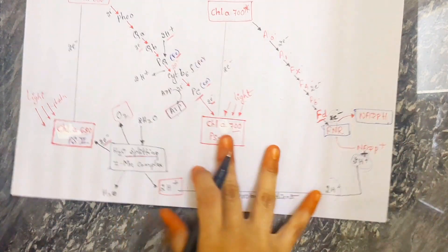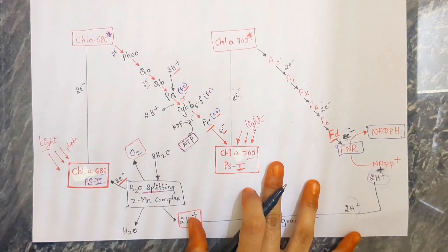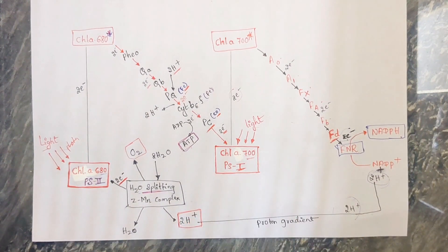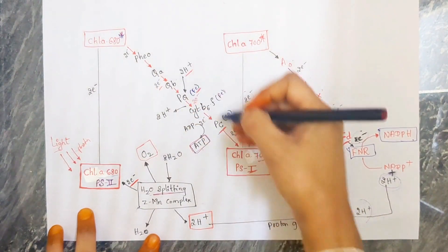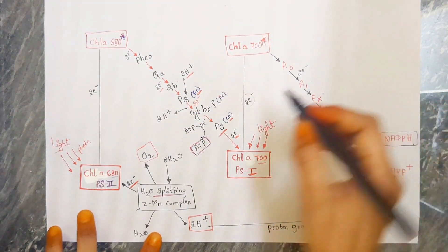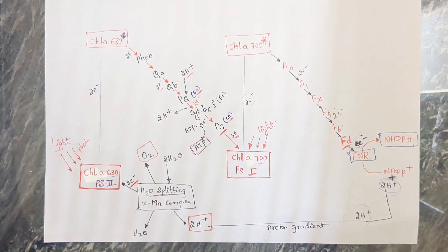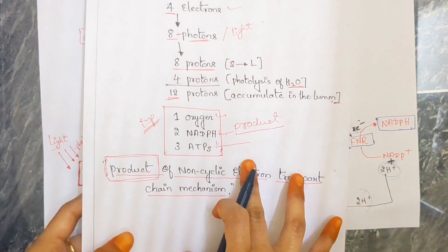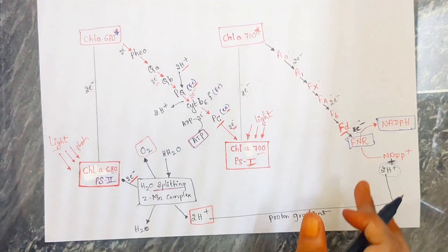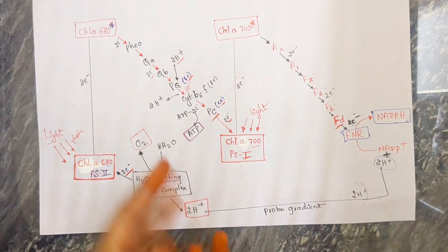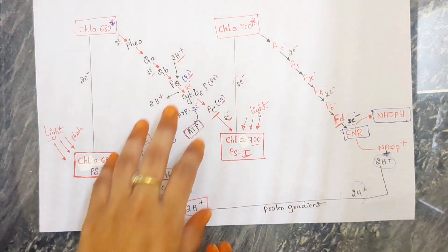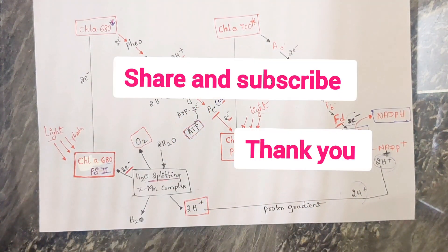I'm hoping this is very simple to understand. There will be more points on this cyclic electron transport system, and they will ask the sequences of these molecules or complexes. So you have to be thorough with this diagram, practice this diagram, and also know the end products of the non-cyclic electron transport system. I'm hoping this video is helpful — please do share and subscribe. Thanks for watching.